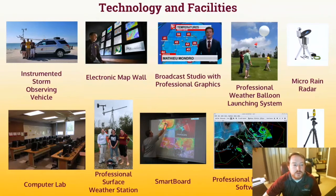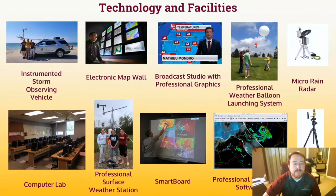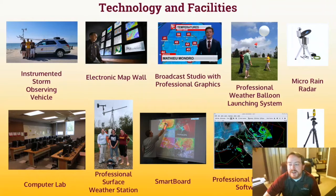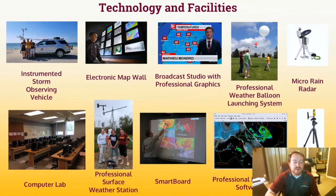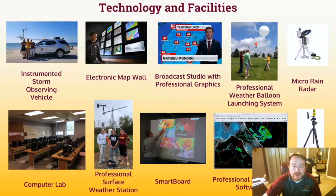This shows all the facilities we have. First is the instrumented storm observing vehicle run by Dr. Keeler. Every summer he's been out exploring storms along the edge of Lake Michigan where storms move onshore. We have a map wall in the lab and also online, a full TV studio, a small local-area radar, a balloon launching system, portable weather stations, a computer lab, the weather station itself, and a smart board and professional forecasting software within the meteorology computer lab.